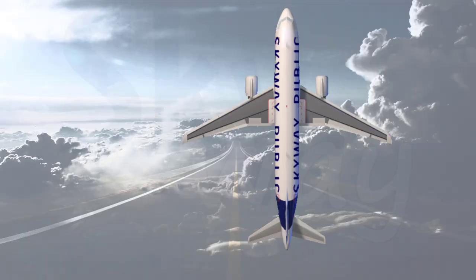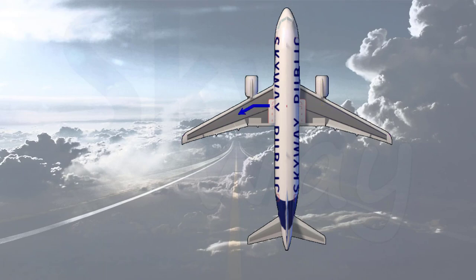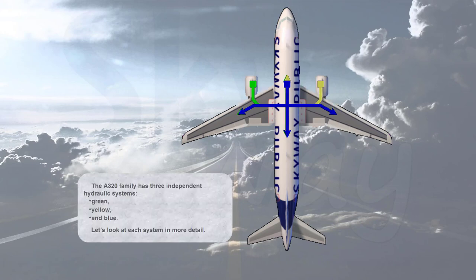The A320 family has three independent hydraulic systems: green, yellow, and blue. Let's look at each system in more detail.